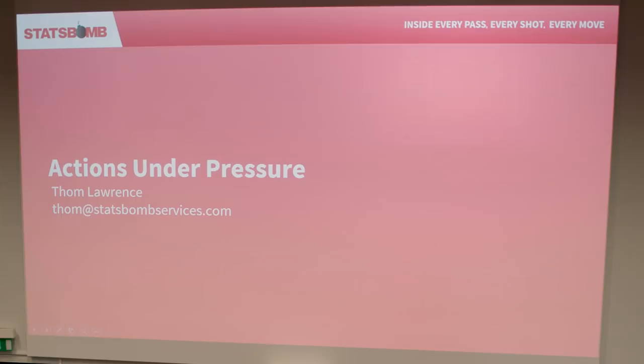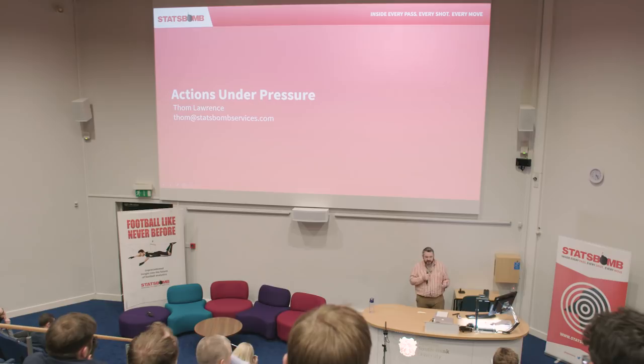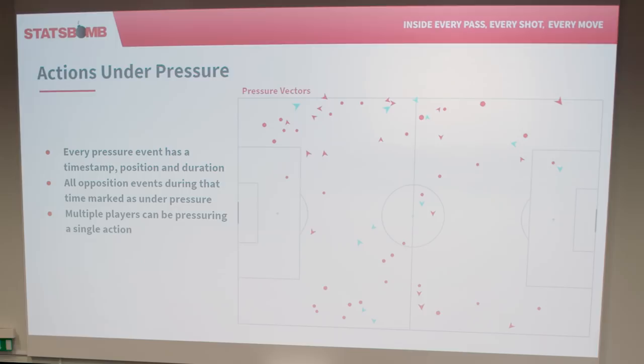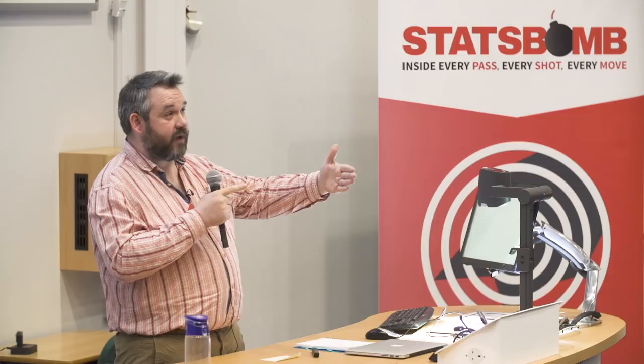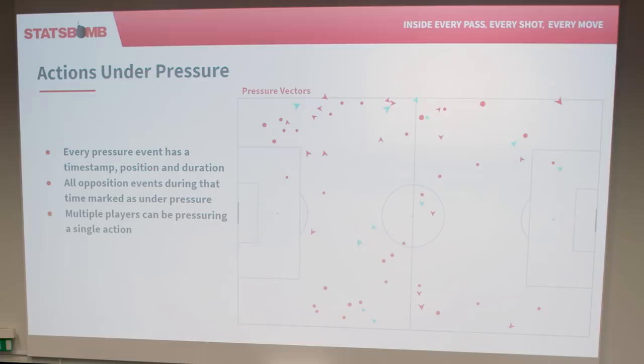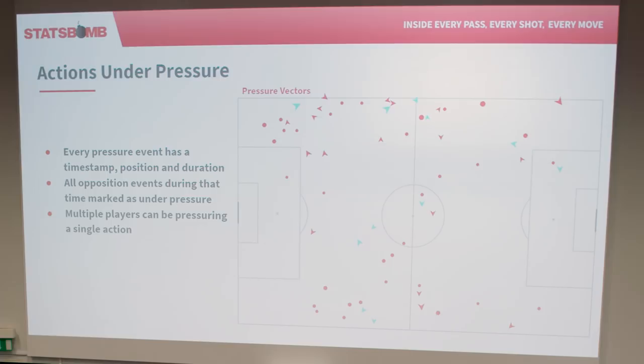What I'd like to do now is turn those pressure events on their head and look at actions under pressure — how do these pressure events affect the player being pressured, what they choose to do, and how they're able to do it. When we record a pressure event it always has the player doing the pressing, the timestamp, and position, but we also always measure a duration — the period for which the pressing player is tracking the player with the ball. Multiple players can be doing that, and every action the player on the ball takes within that window is marked as under pressure.